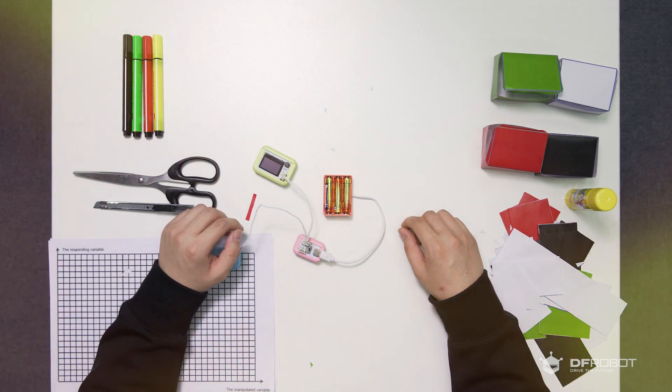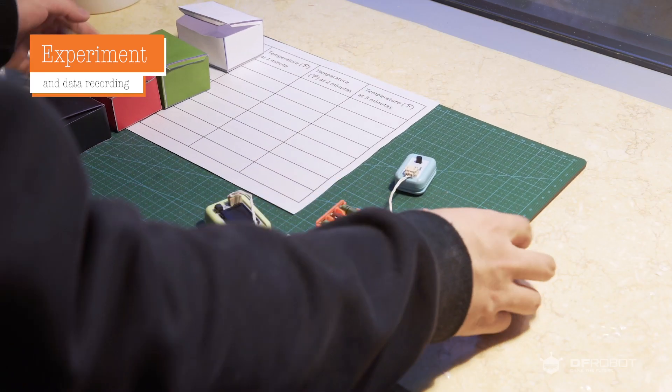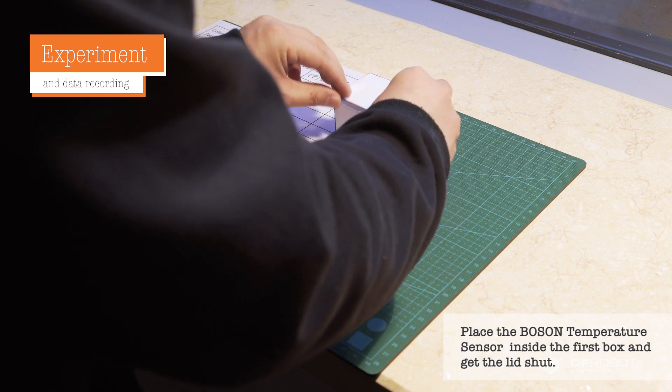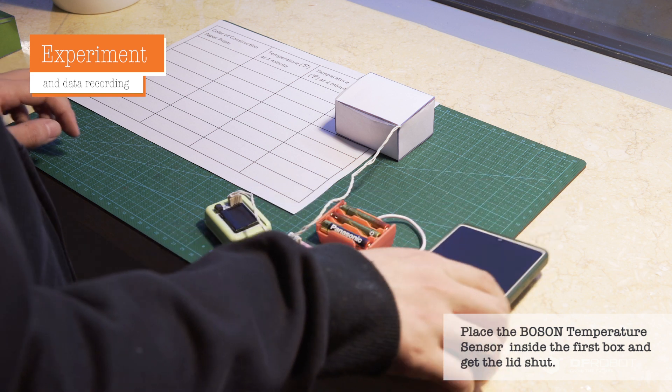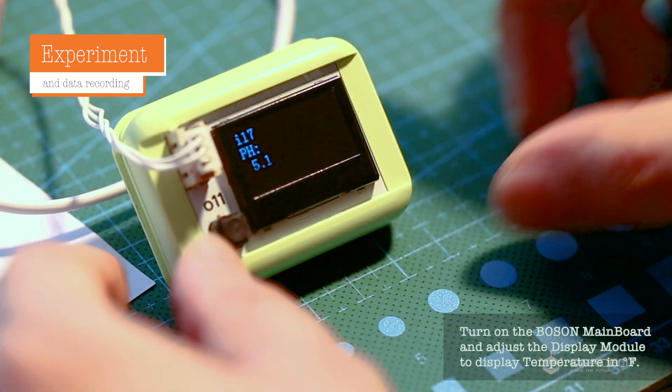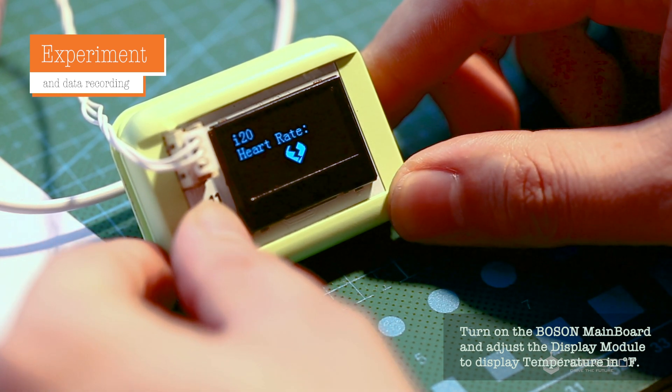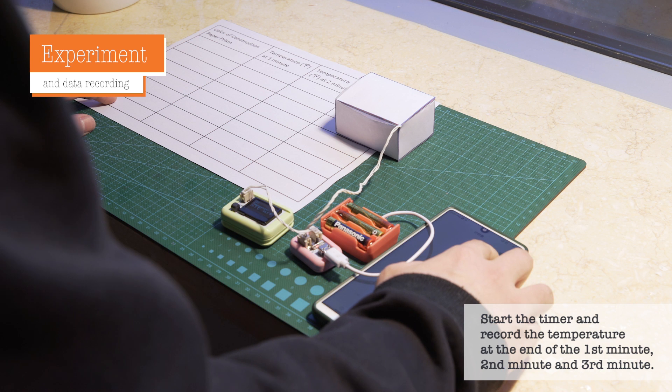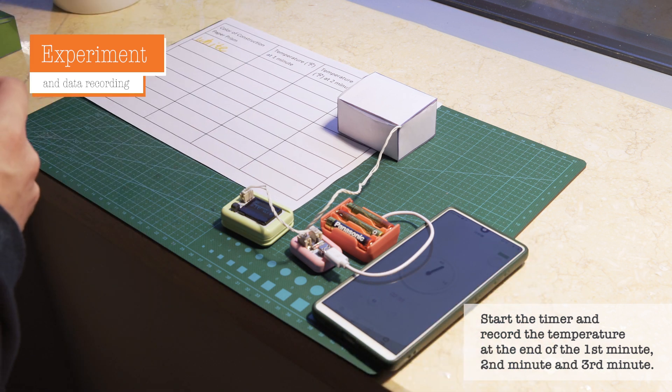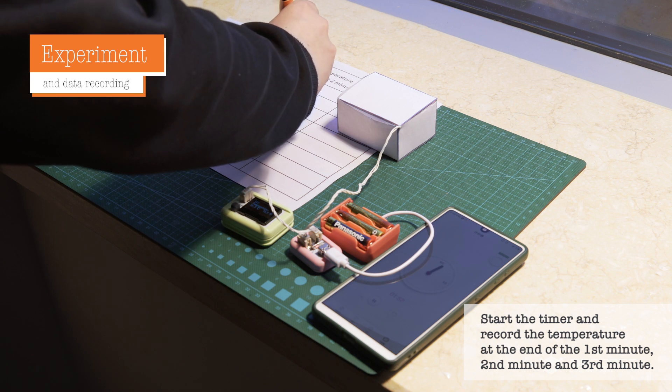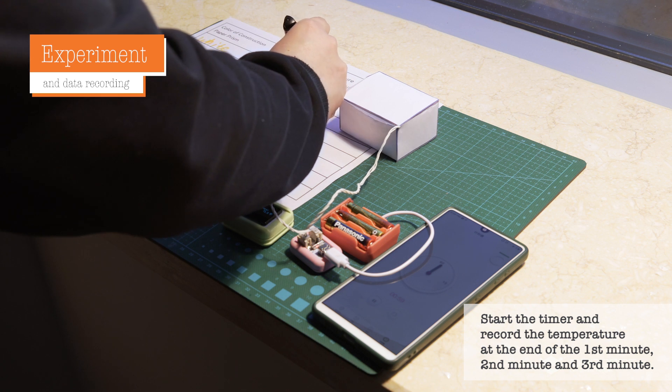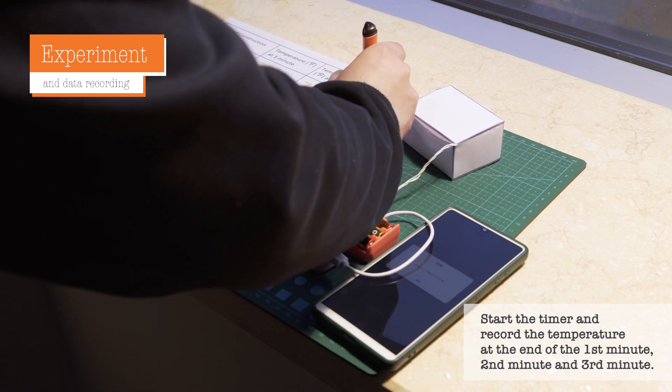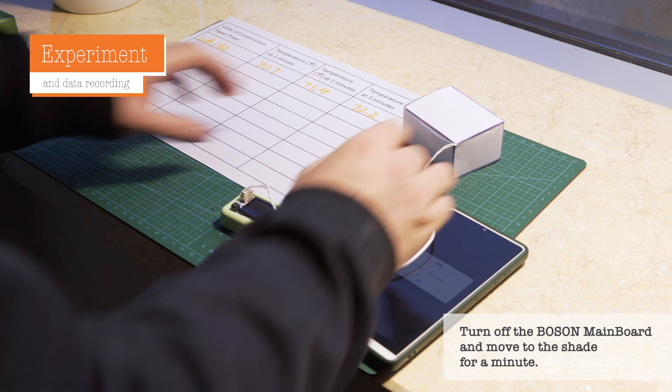So now let the experiment begin. Move your rectangular box into the sunlight. Place the Boson temperature sensor inside the first box and get the lid shut. Turn on the Boson mainboard and adjust the display module to display temperature in Fahrenheit. Start the timer and record the temperature at the end of the first minute, second minute, and third minute.